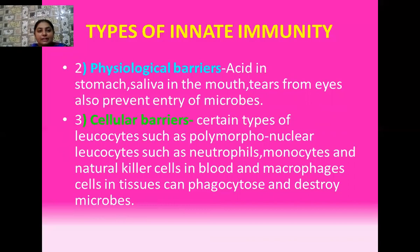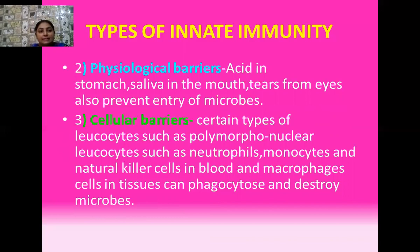Then cellular barriers — there are certain cells which act as barriers. These cells are collectively known as polymorphonuclear leukocytes. Different types of leukocytes come under this category, such as neutrophils, monocytes, mast cells, natural killer cells, and macrophages present in your tissues. These cells do the task of phagocytosis. Whenever a pathogen enters your body, these cells get active, try to kill the pathogen, and later become successful.